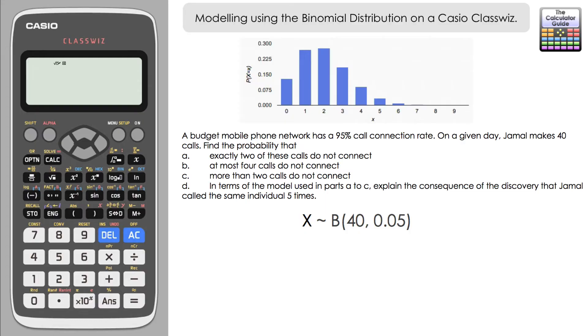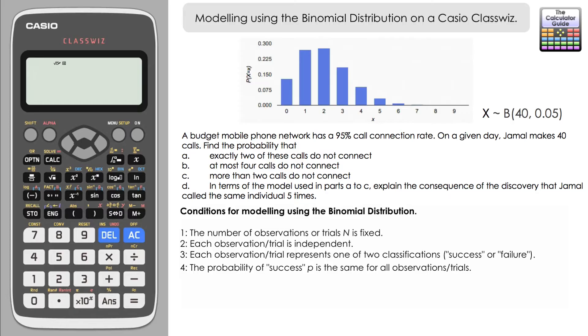Now there are some conditions that we just need to check are satisfied in order for us to be able to do this. Firstly, that we've got a fixed number of observations or a fixed number of calls in this case, which we have. Secondly, that each is independent. So that's saying that each call that's been made by Jamal is independent from one another. Well, yes, we'll assume that's true.